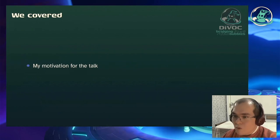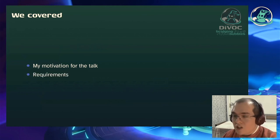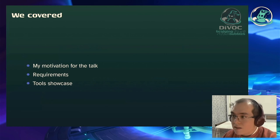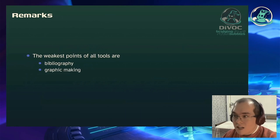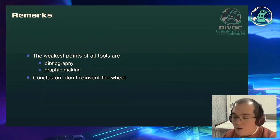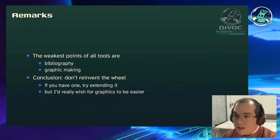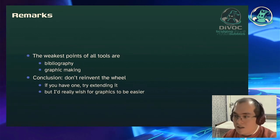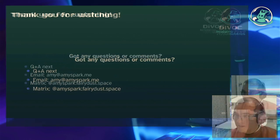Schlussfolgerung. Wir haben jetzt darüber geredet, warum ich über all diese Sachen sprechen wollte, was die Voraussetzungen sind, um gute Folien zu erstellen, und ich habe ein paar Werkzeuge vorgestellt. Die schwächsten Punkte der ganzen Werkzeuge sind die Bibliografie und das Erstellen von Grafiken. Ich würde sagen: Nicht das Rad neu erfinden. Wenn ihr schon ein Werkzeug habt, versucht es weiter zu benutzen und zu erweitern. Aber ich fände es wirklich gut, wenn es einfacher wäre, Grafiken zu erstellen. Danke fürs Zuschauen. Ich bin offen für Fragen.